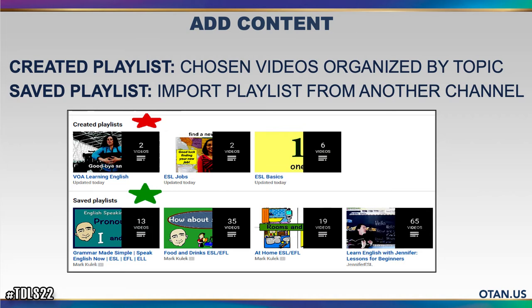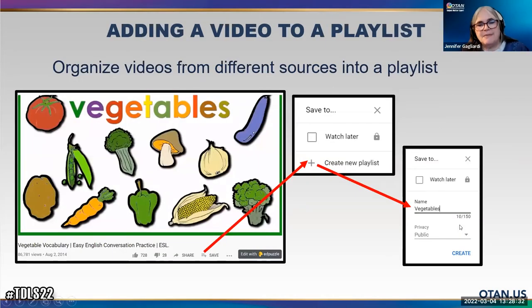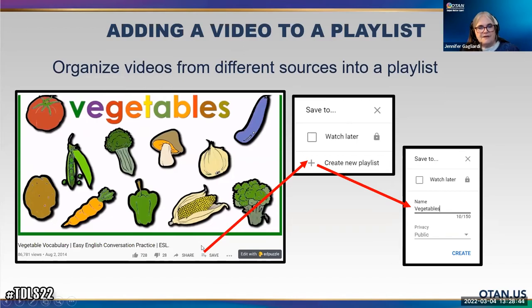You can also embed this information into your Canvas course or your distance learning management system, or embed it in my blog, so they have a one-stop shop where they can find the video and follow a series of videos. So here I'm showing how I put a video I found into a playlist. I found this random video from Mark Kulik about vegetables. I've clicked the little icon that talks about saving or sharing. I say I want to create a new playlist, put in the name vegetables, and hit create.